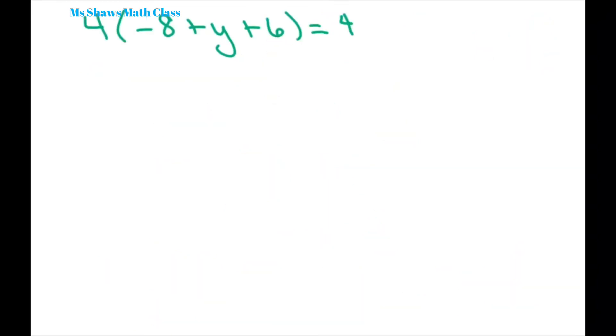So you're going to get negative eight plus six. That's negative two plus y equals four. And we're going to distribute with the distributive property. You get negative eight plus four y equals four.